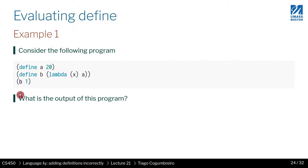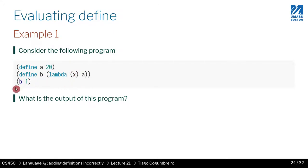Our first example is very simple — it only has three terms. The first term defines a variable a, assigning it 20. The second term defines variable b, where we assign a function that takes x and returns a. Finally, we call b — the variable declared in the second term — and pass 1 to it. What is the output of this program?